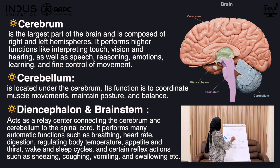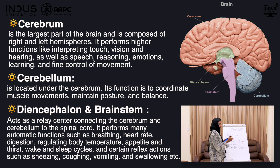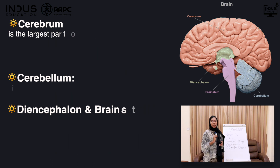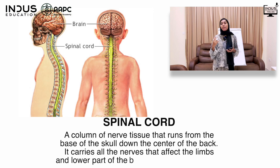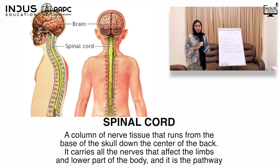The Cerebellum, Diencephalon, and Brainstem are the remaining major parts. The Cerebellum is responsible for muscle movements and coordination. Pathways connect the brain to the spinal cord, and we will cover all these parts of the brain in detail.